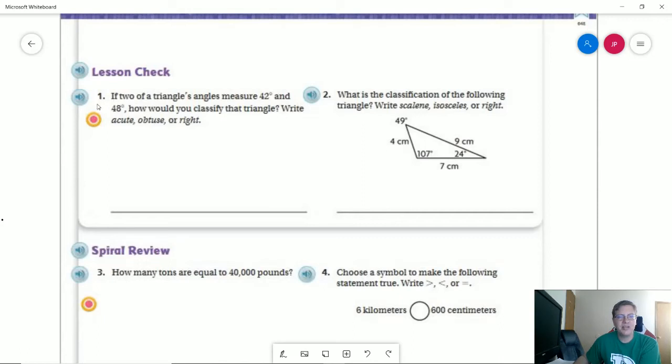So number one on the back, two of the triangle's angles measure 42 and 48 degrees. That means if I add these together, I am going to get 90 degrees, which means I have 90 degrees to go to finish my 180 degrees. And so my third and final angle has to be 90 degrees. And so that would give us a right triangle.